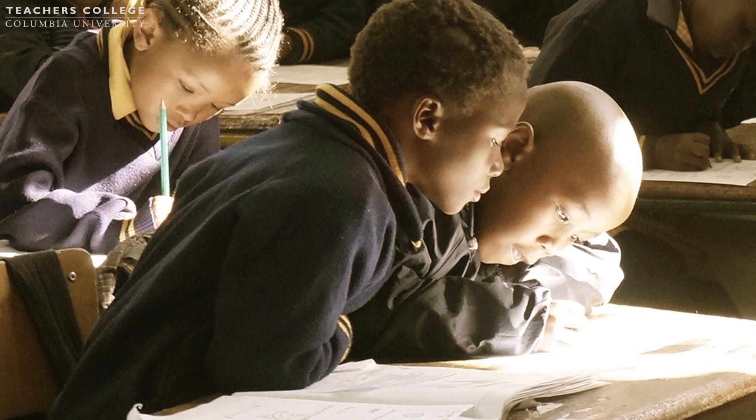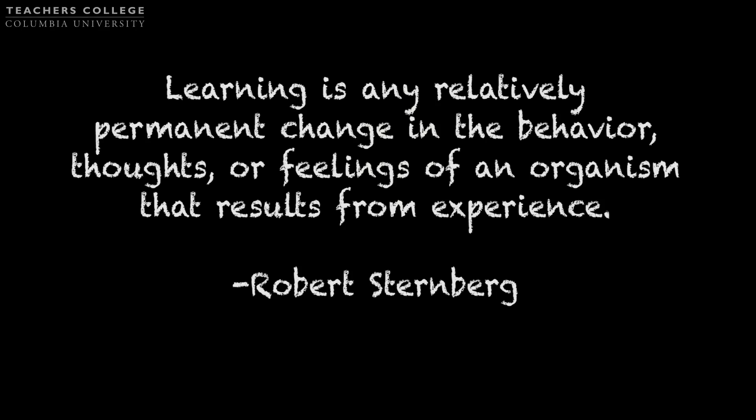What do we mean by learning? While there are many definitions of learning, Robert Sternberg, a cognitive scientist, provides one that is clear and concise. He says: learning is any relatively permanent change in the behavior, thoughts, or feelings of an organism that results from experience. Notice Sternberg mentions not only that learning is reflected in visible behaviors and actions, but also through changes in interior thoughts and feelings that are indiscernible by the outside observer.